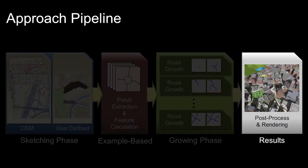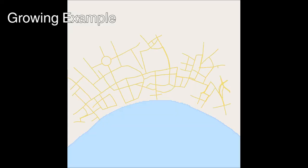After arterial road generation, local streets are generated in a similar manner. Here, we show an example-based growth progression of an urban area.